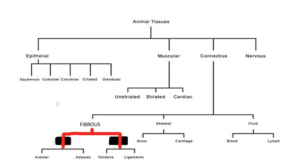We come to the last or third part of connective tissue — that is the fluid connective tissue. Under this, there are again divisions called blood and lymph. Fluid means liquid. These types of connective tissues are in the form of liquid that connects one part of the body to the other, transporting various nutrients and essential substances in our body.